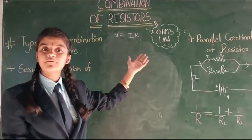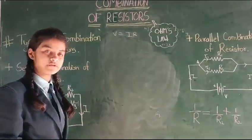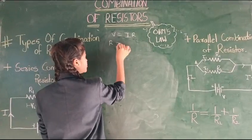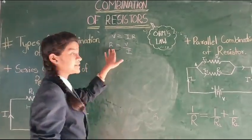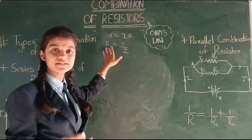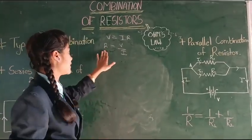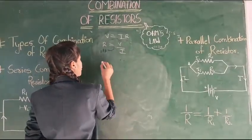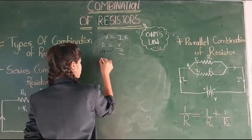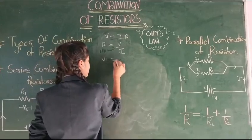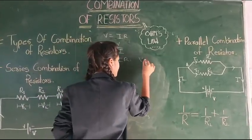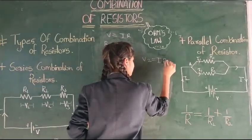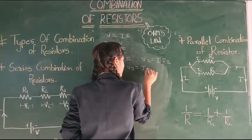We need to derive from this particular formula for the series combination of resistors. We will write here R equals to V by I. R is the resistance, which varies in series combination. That is why we need to find the total resistance. So for this we can write: V1 equals to I R1, V2 equals to I R2, V3 equals to I R3.